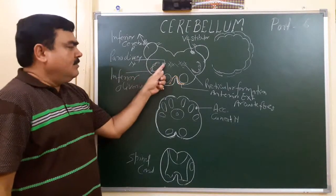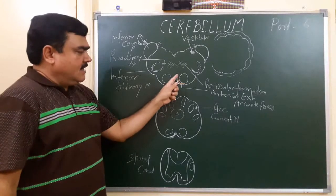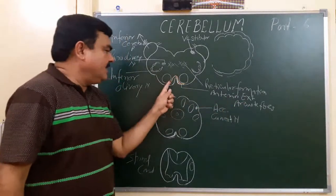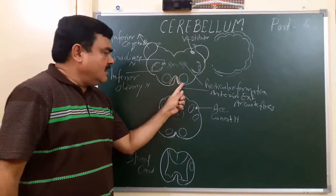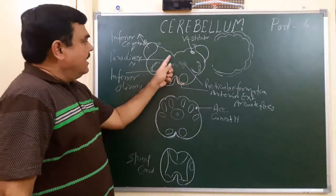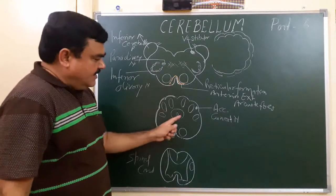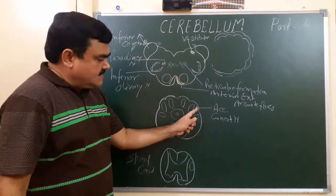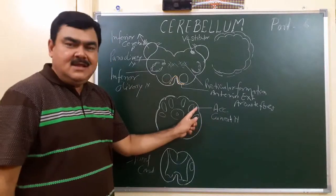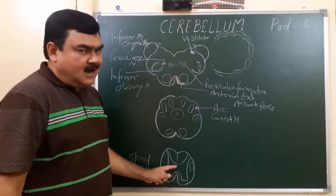This is the paraolivary nucleus. Here is the anterior external arcuate fiber. This is another section of the medulla oblongata. Here you can see the accessory cuneate nucleus, and here is a section of the spinal cord.